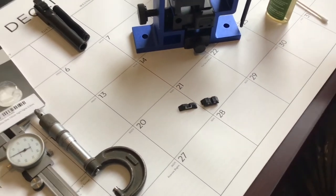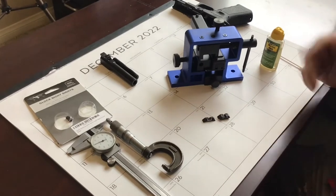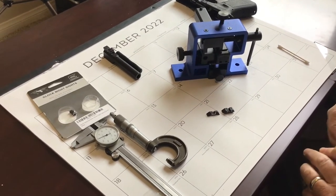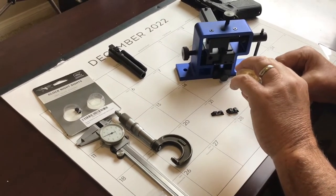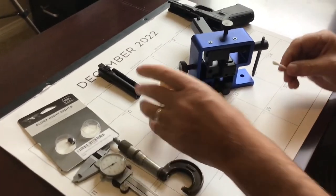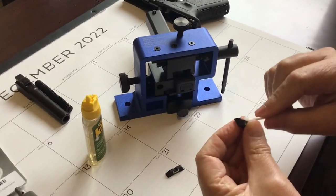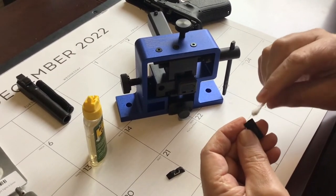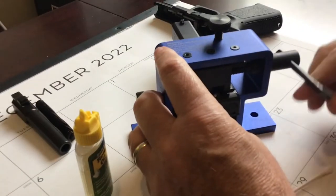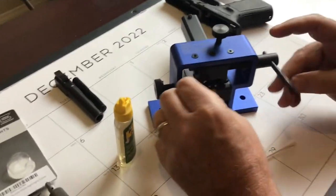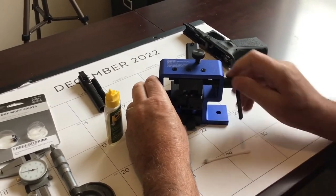Furthermore, because that is a press fit here in the dovetail on the slide, I'm just going to add a very light application of oil in the slide, put a little bit on the dovetails themselves on the new sights. We should be good to go. Now we're going to use the tool to push the new sights back in.